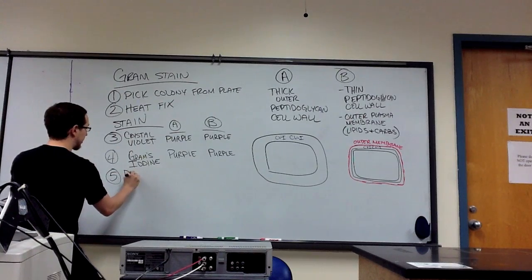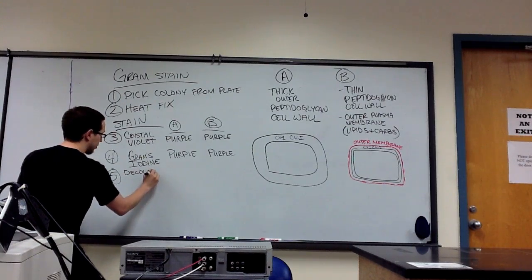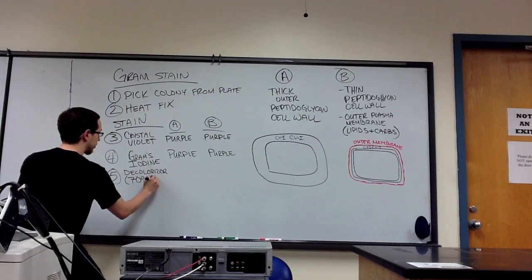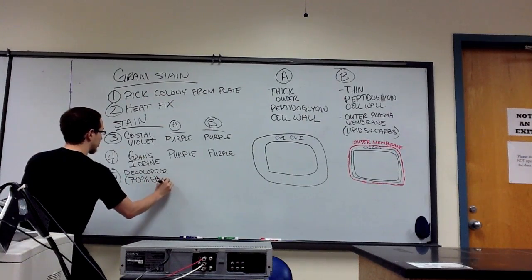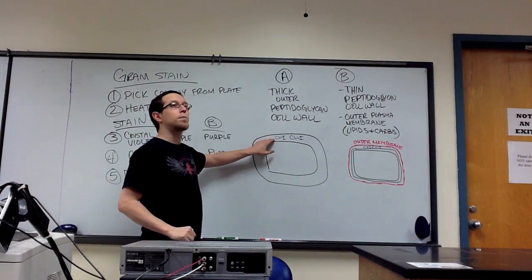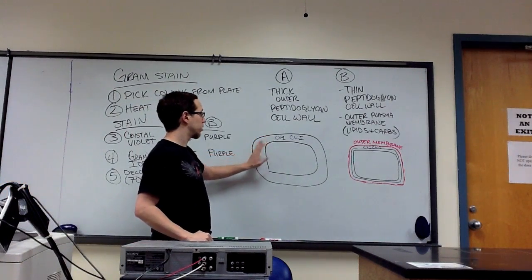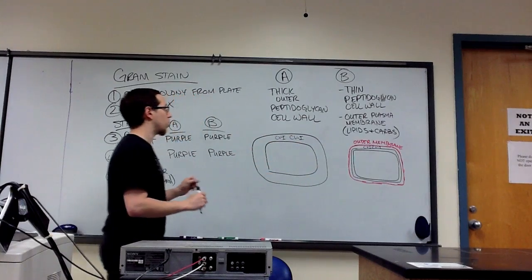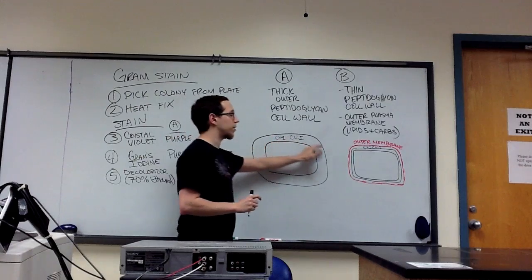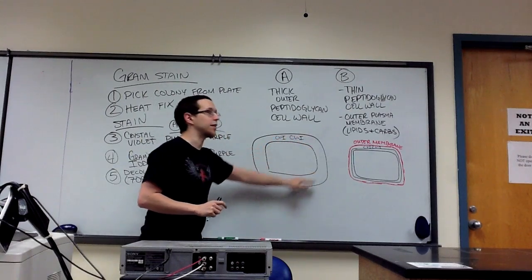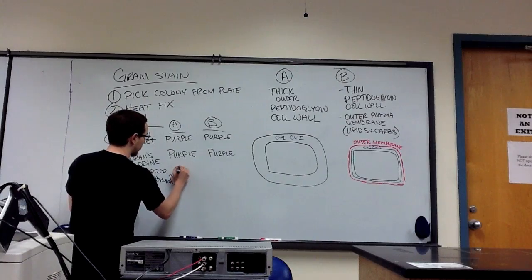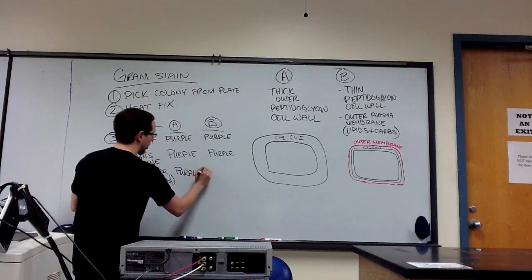We're going to add what's known as a decolorizer. In this case, it was 70% ethanol. And here's what it does. It causes the pores on this thick peptidoglycan cell wall to close up. And in doing so, traps the crystal violet-iodine complex in the thick peptidoglycan cell wall, thus resulting in these cells retaining their purple color.